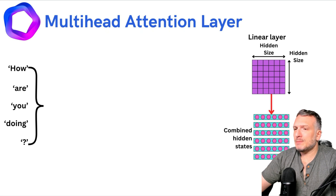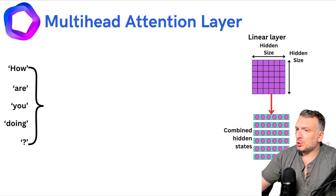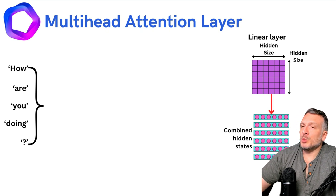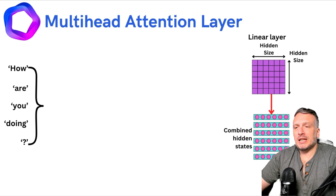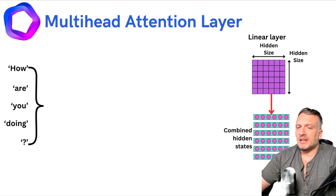A multi-head attention layer is basically different attention layers put together in parallel. If we have multiple attention layers in parallel, we're going to be able to learn different types of interactions between the different tokens in the input sequence. By combining those, we're going to learn richer information. We also have an additional linear layer that helps combine the different hidden states coming out from the different attention layers.